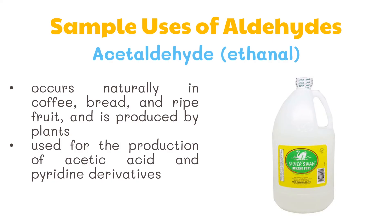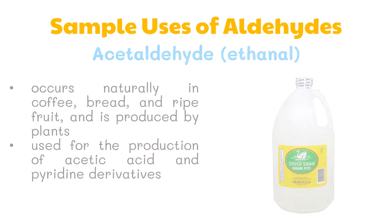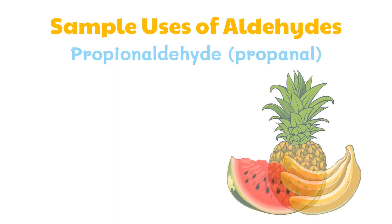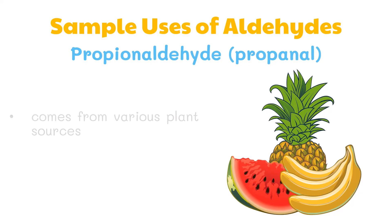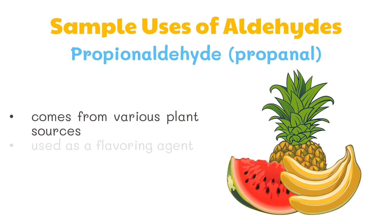Vinegar is only 5% acetic acid. Propionaldehyde, also known as propanal, comes from various plant sources like banana, melon, and pineapple. It is used as a flavoring agent.